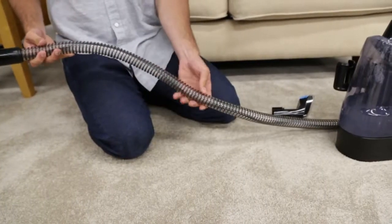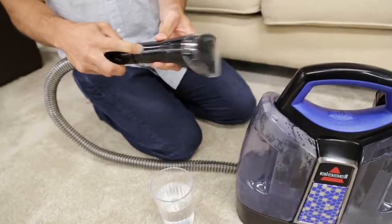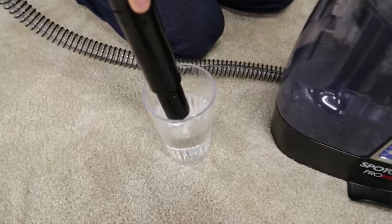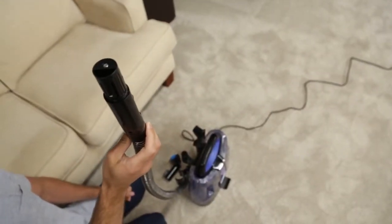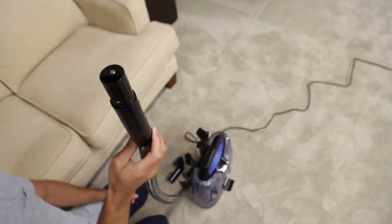Now, check for any cracks or clogs in the hose. With the tool removed, try suctioning water from a cup. Lift the tool and point upwards to allow all the water in the hose to flow into the dirty water tank.